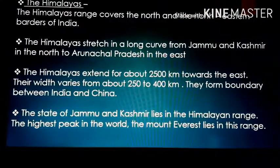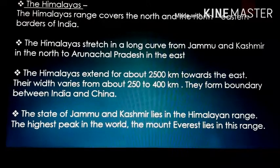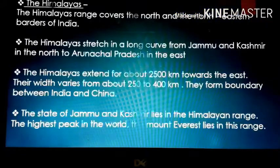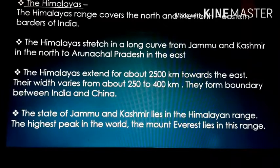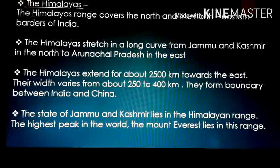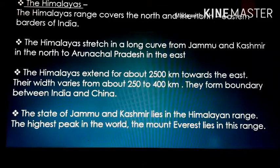The first topic is the Himalayas. The Himalayas range covers the north and northeastern border of India. It is stretched in a long curve from Jammu and Kashmir in the north to Arunachal Pradesh in the east. The Himalayas form a boundary between India and China. The state of Jammu and Kashmir lies in the Himalayan range. The highest peak in the world, Mount Everest, lies in this range.